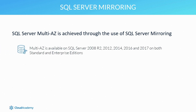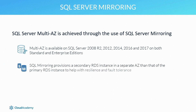For the latest supported versions, please see the AWS documentation relating to SQL Server. The principle is much the same between SQL Server mirroring and RDS failover in that both methods are used to provision a secondary instance to act as the primary instance in the event of an outage. SQL Server mirroring provisions a secondary RDS instance in a separate AZ to help with resilience and fault tolerance.